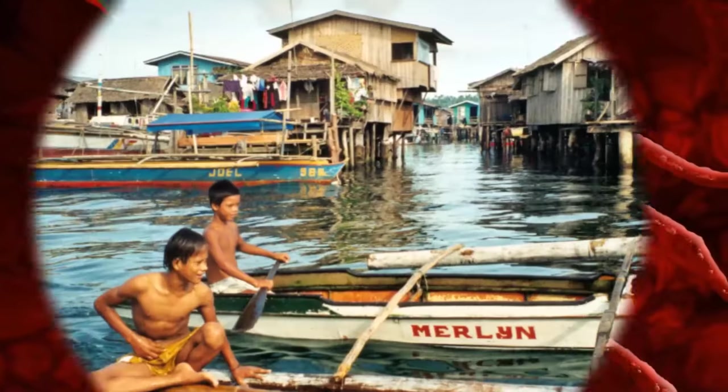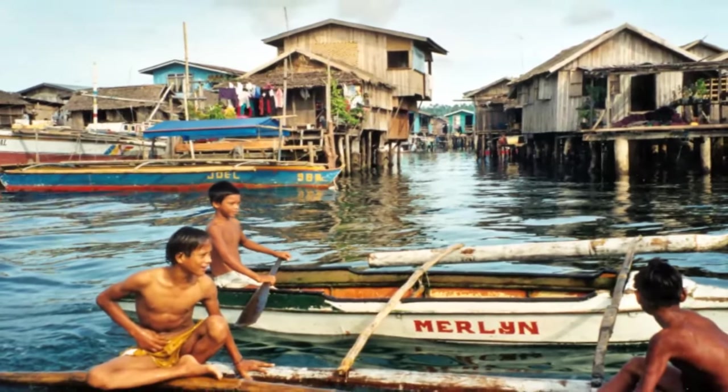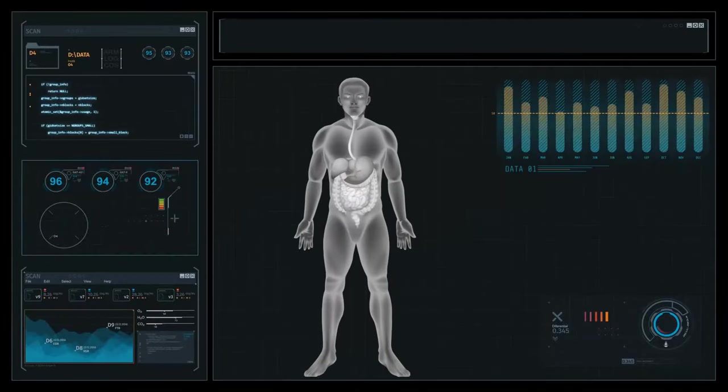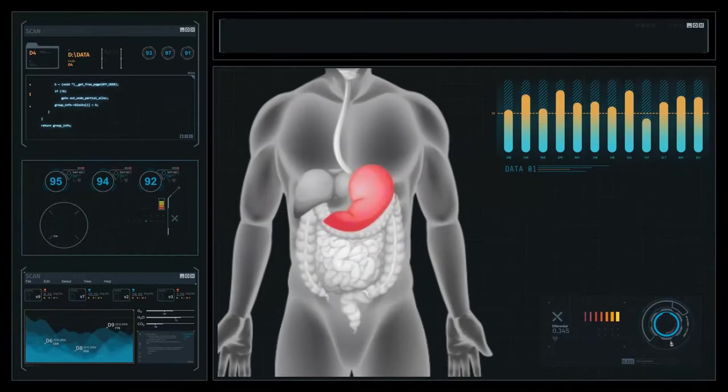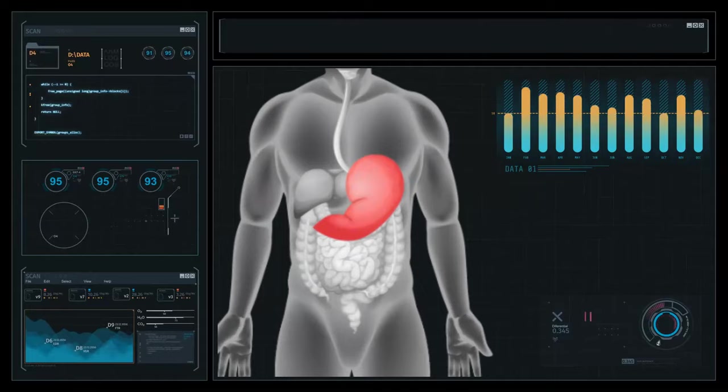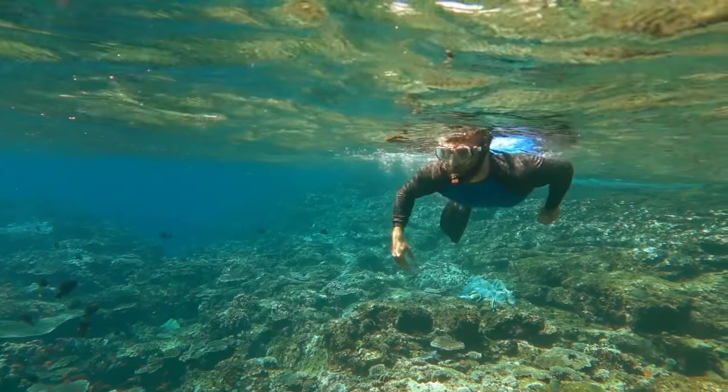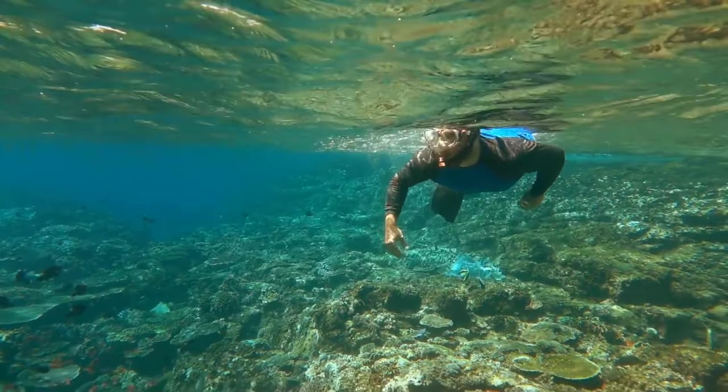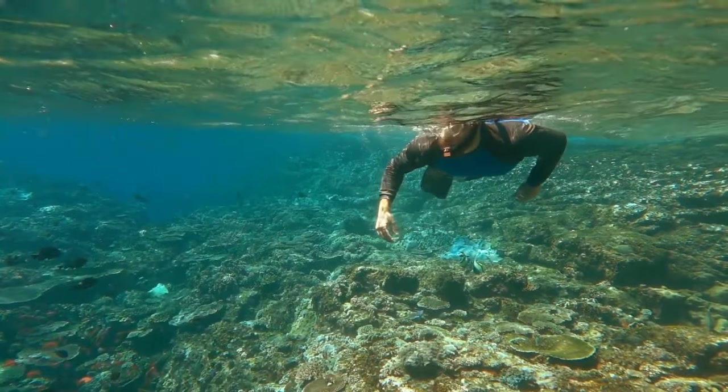The Bajau are sea nomads living in Southeast Asia. These people have evolved an extra-large spleen, serving as a repository of oxygen-rich blood cells. Thanks to that, they can easily spend 5 to 10 minutes fishing underwater without coming up for air even once.